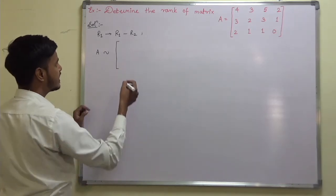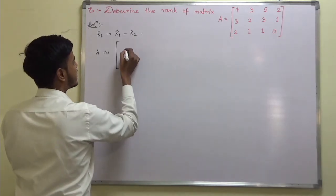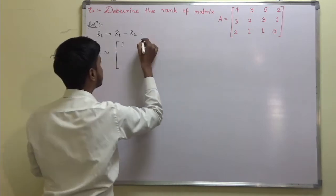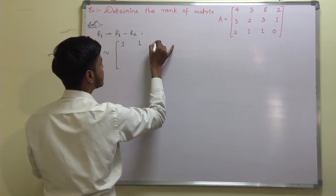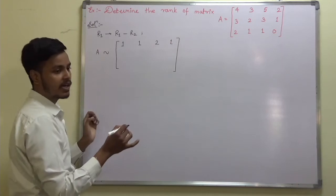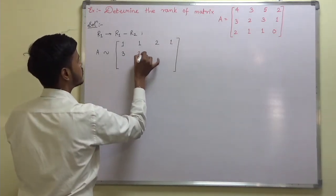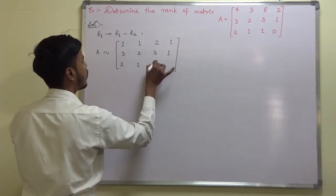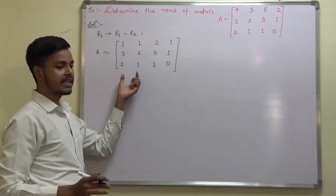So matrix A is equivalent to the new matrix after the change in r1, while r2 and r3 remain as they are. What is the result? 4 minus 3 is 1, 3 minus 2 is 1, 5 minus 3 is 2, and 2 minus 1 is 1. There is no change in r2 and r3, so write them as: 3 2 3 1 and 2 1 1 1 0.